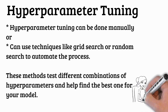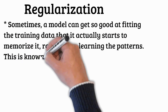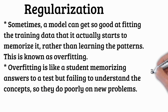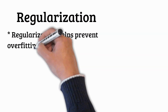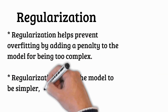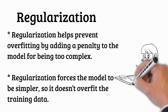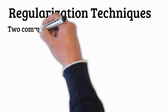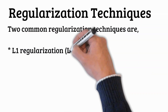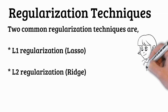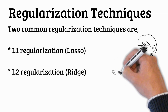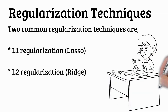These methods test different combinations of hyperparameters to find the best one. Next is regularization. Sometimes a model gets so good at fitting the training data that it memorizes it rather than learning the patterns — this is known as overfitting. Overfitting is like a student memorizing answers to a test but failing to understand the concepts, so they do poorly on new problems. Regularization helps prevent overfitting by adding a penalty to the model for being too complex, forcing it to be simpler. Two common techniques are L1 regularization (lasso), which can zero out some features entirely, and L2 regularization (ridge), which penalizes large weights in the model, encouraging more balanced predictions. Both help improve the model's ability to generalize to new data.